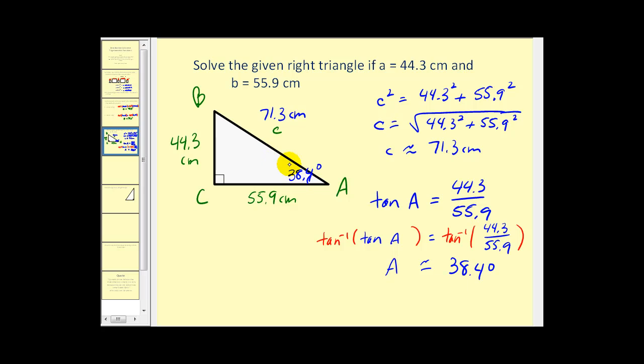Now we know that these two angles, A and B, must be complementary. So 90 minus 38.4 would give us 51.6 degrees for angle B. And we have solved the right triangle.